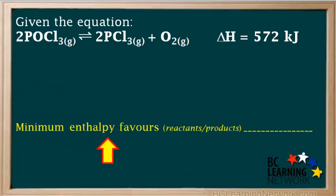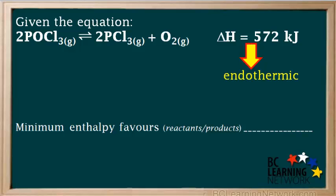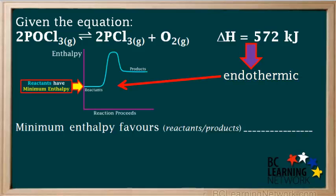Let's start with the first question: will minimum enthalpy favor reactants or products? We see that delta H is written beside the equation and its value is positive, therefore the reaction is endothermic. Looking at a potential energy diagram for an endothermic reaction, we see that the reactants have minimum enthalpy, and we can say that the tendency toward minimum enthalpy favors the reactants in this case.